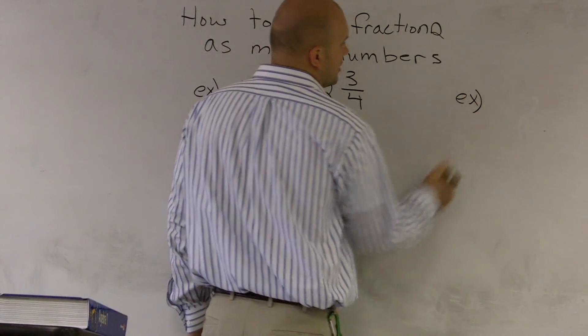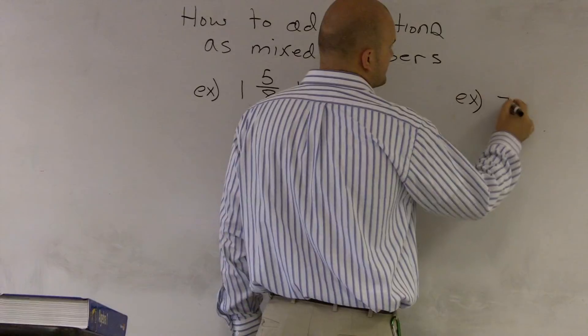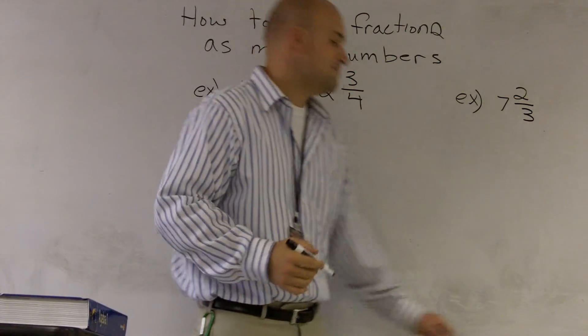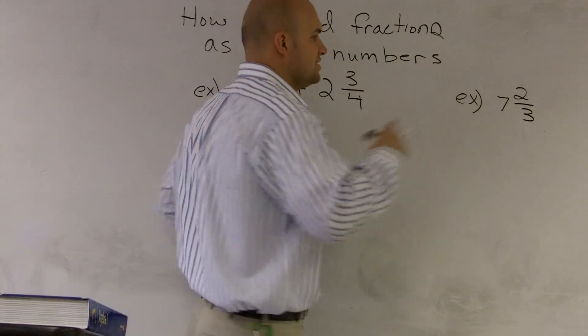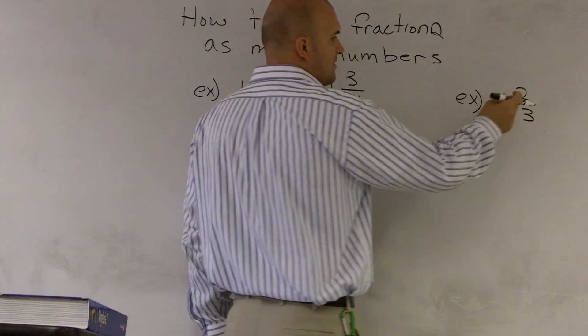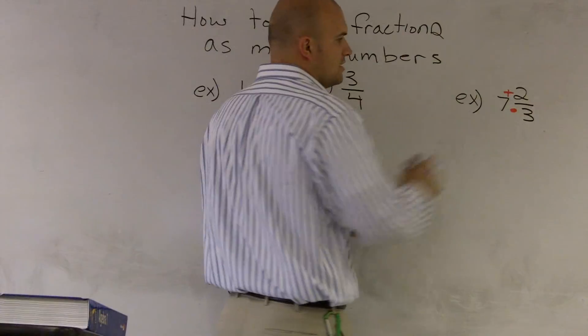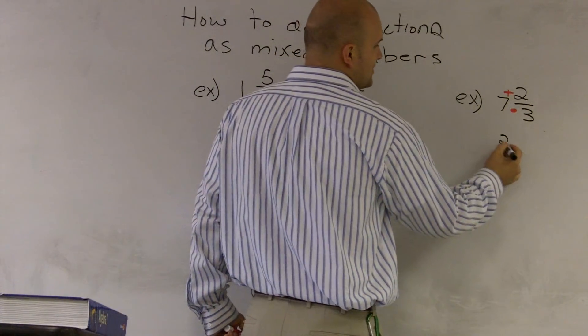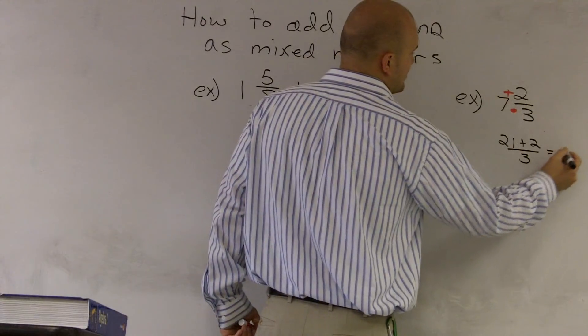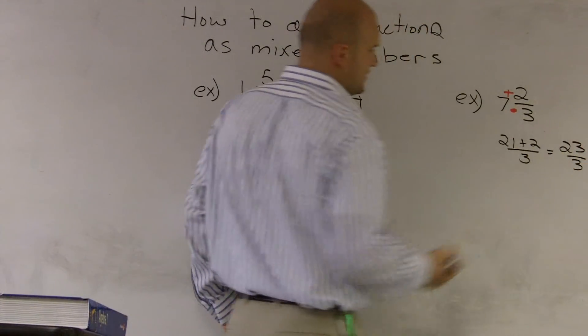A quick example over here is if I have 7 and 2 thirds. To change that to an improper fraction, what we do is multiply our denominator times the whole number and then add it to our numerator. So 7 times 3 would be 21 plus 2 over 3. So you get 23 over 3.